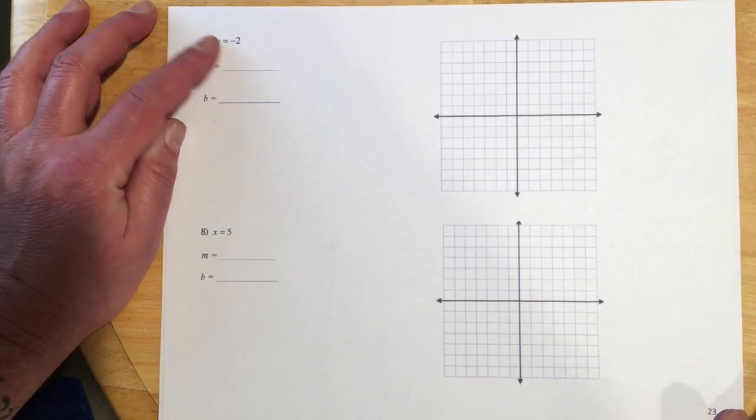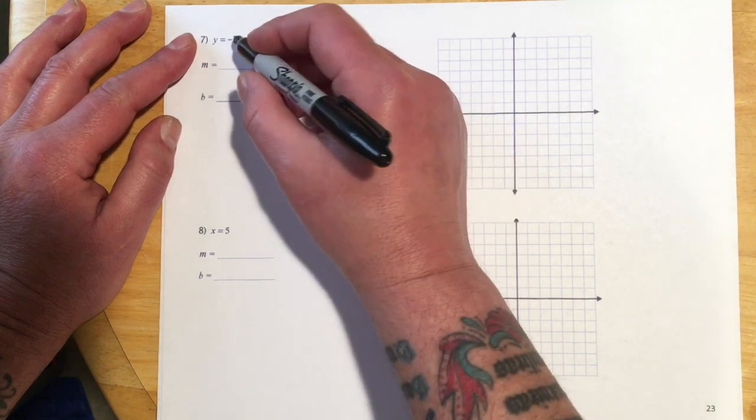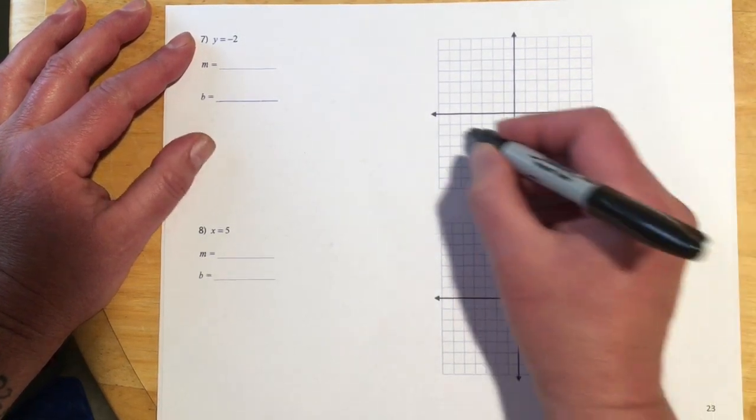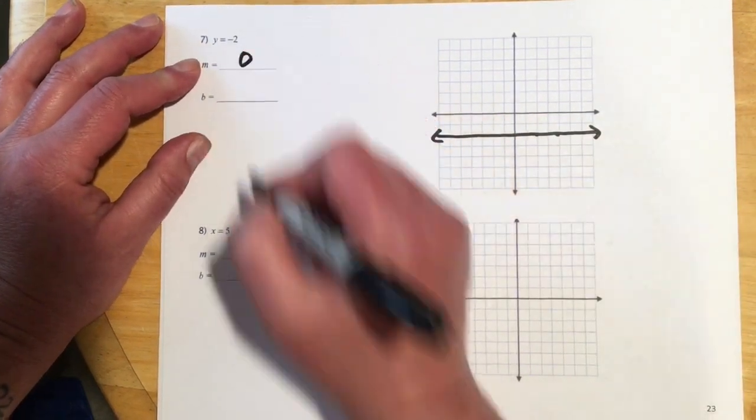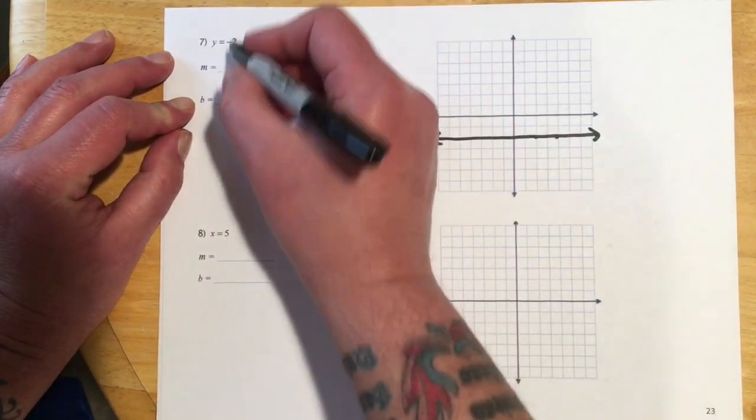Okay, so this next one, y equals negative 2. So that's the horizontal line we just saw. So that means no matter what x is, y is always going to be negative 2. So our graph would look like this. Our slope on that, remember, is 0. And our y-intercept is going to be negative 2.